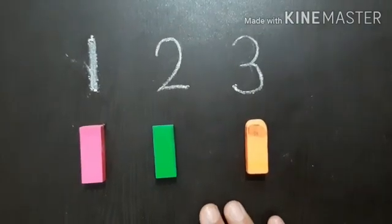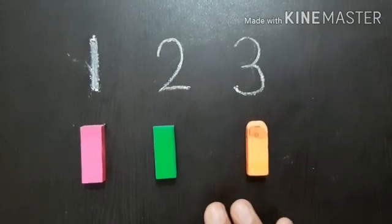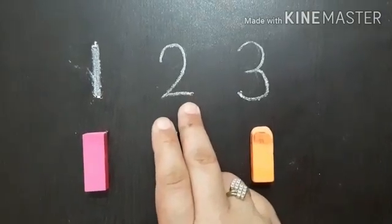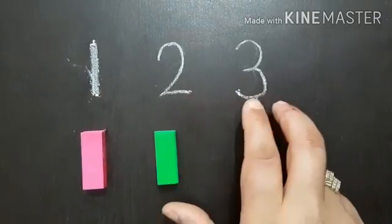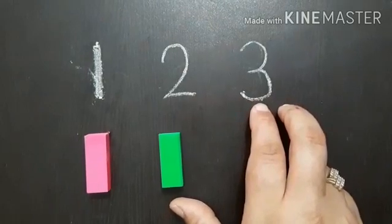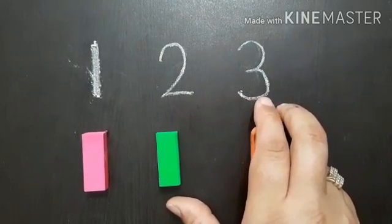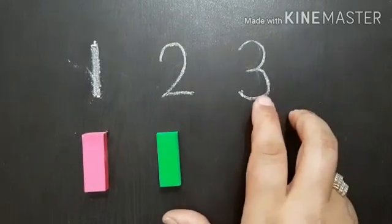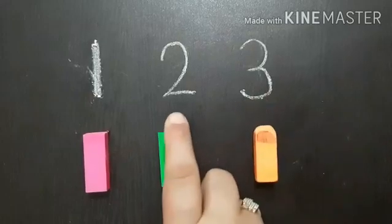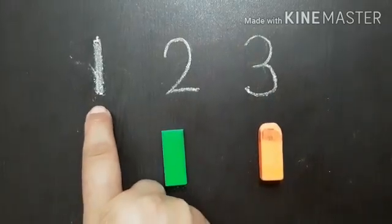In forward counting, you are writing 2 after 1, 3 after 2. Likewise, in backward counting, you are writing 3, then 2, then 1.